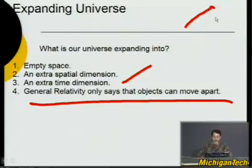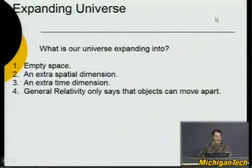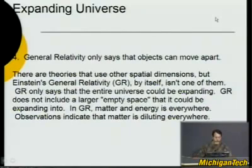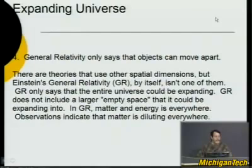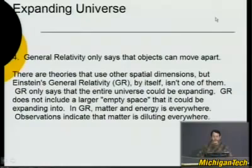Or does general relativity only say that objects can move apart — it doesn't really say more? General relativity really only says that objects can move apart. It tries to use as few variables as possible. Its density for the universe includes homogeneity and isotropy, so there's only one density for the universe and it's the same in every direction. General relativity really only says that the energy density is changing with time, and since there's only one density everywhere in the universe, it's changing everywhere in time.